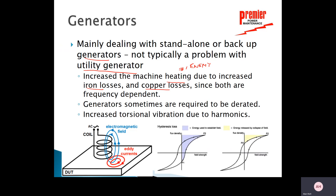Both iron losses and copper losses are frequency dependent. Sometimes equipment has to be derated — emergency backup generators or standalone generators may have to be derated. Transformers may also have to be derated to account for harmonics on the system. Because of harmonics, we'll see not only a heat problem but also vibration inside the unit, which is also problematic.